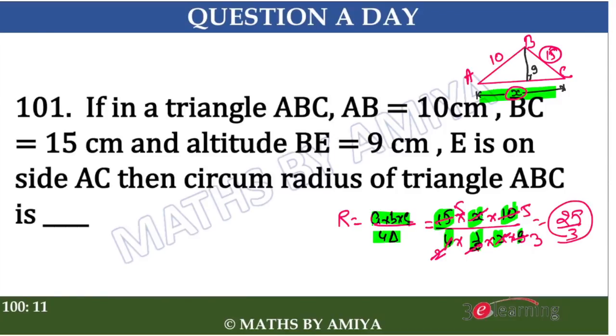This is a 10 to 15 second question if you know the formula. I hope this one is clear to you. If your two sides are given and the altitude on the third side is given, we can easily find the circumradius. This is your concept with this solution. If you have any doubt, I would say feel free to ping me or rewind this video.